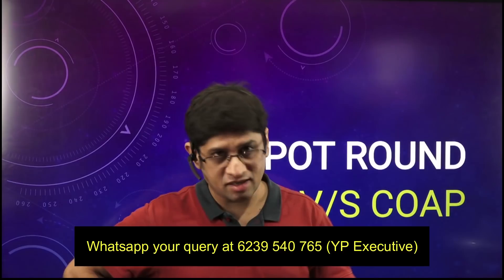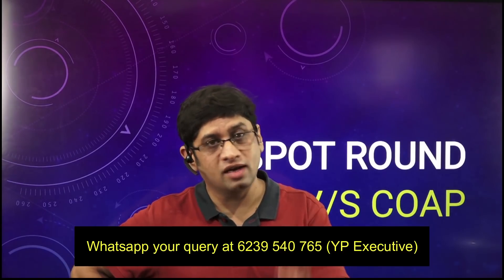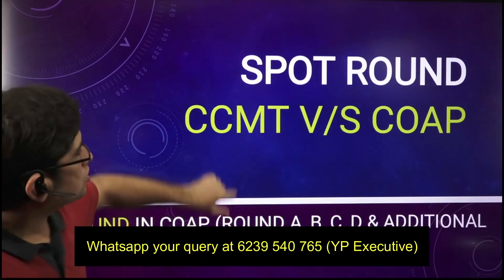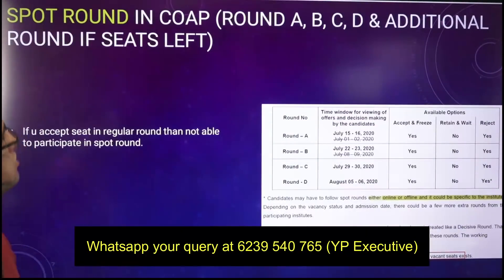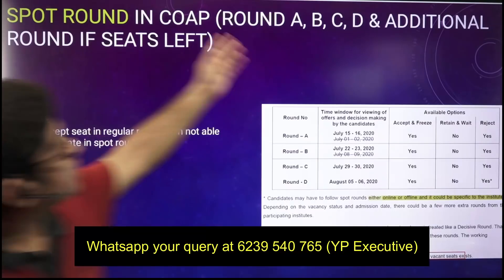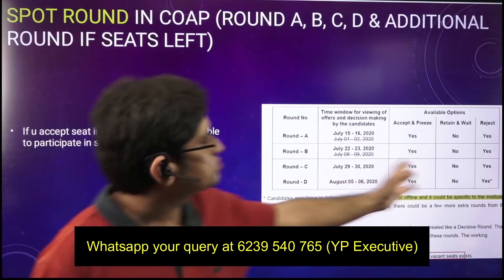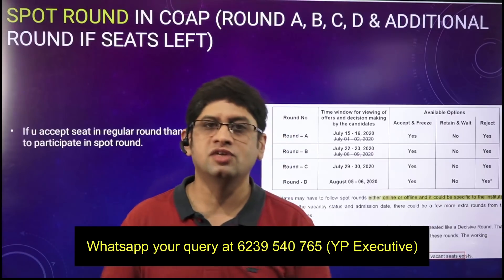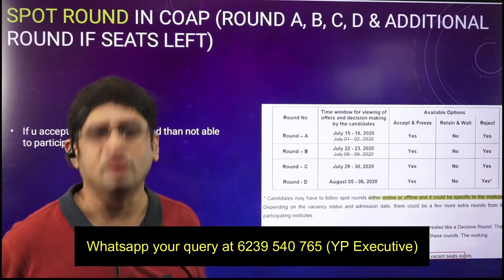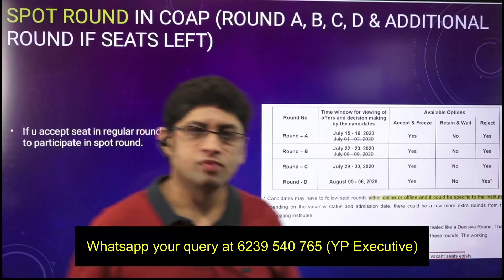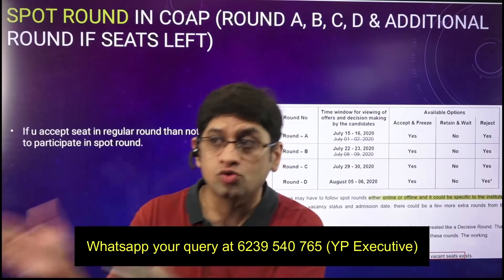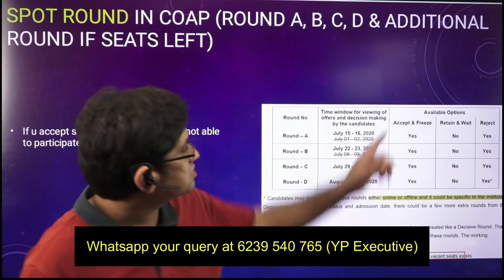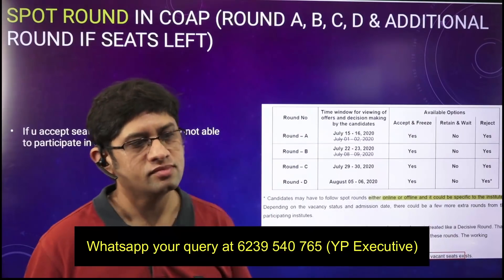Now what to do — should we take it and deposit fees, or should we avail the special round? As you know there are special rounds and spot rounds in both CCMT and COAP. Rounds A, B, C, D are basically the spot rounds. In these additional rounds you can either accept or reject. If you reject it, you go to the next round; if you accept it, it is over. In COAP, if you have already accepted something up to the fifth round, you cannot go to rounds A, B, C, D.